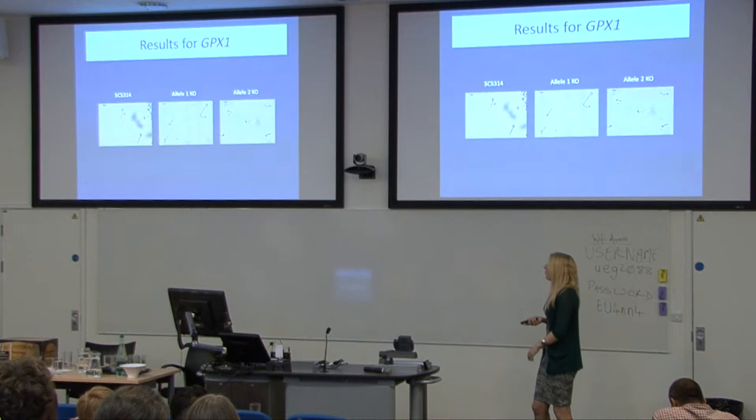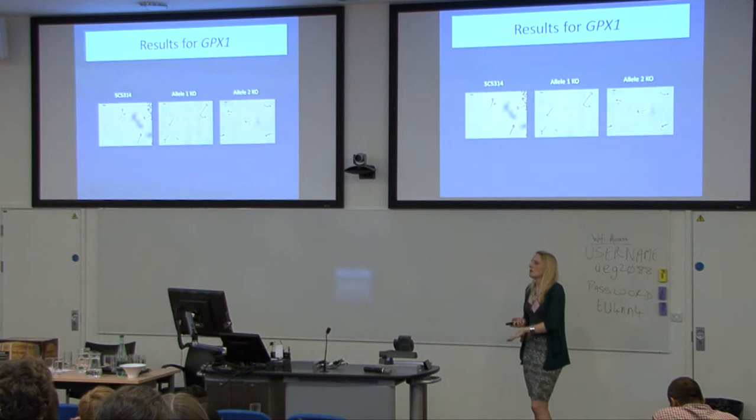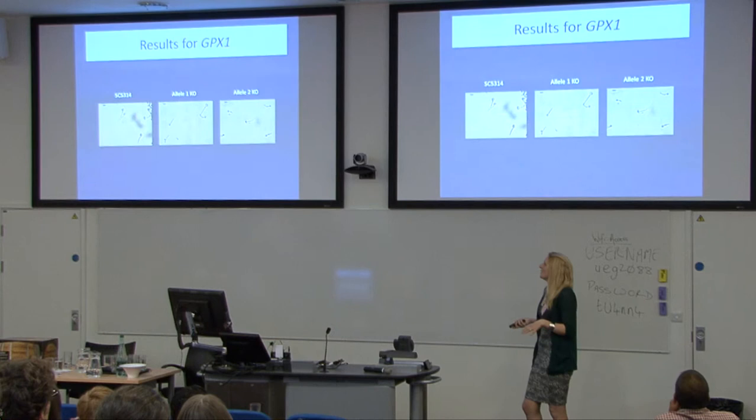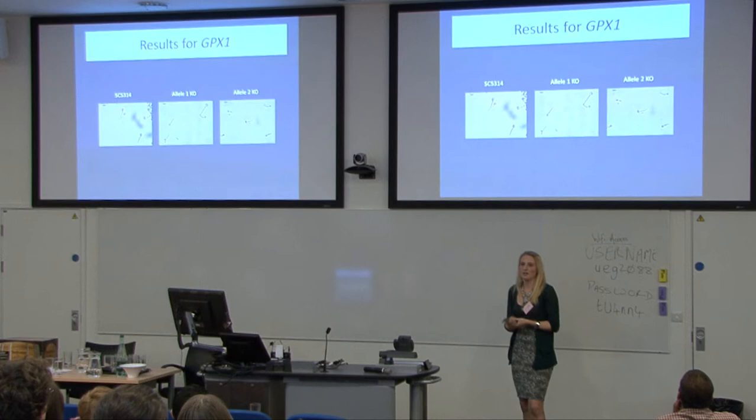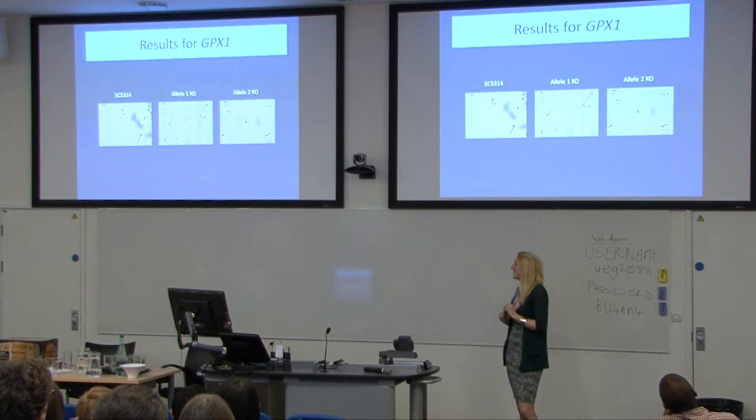Here are the results for one of my knockouts — the glutathione peroxidase gene, GPX1. On all of my knockouts I did general phenotypic screening, including the induction of hyphae. You can see here the wild type, my knockout of allele 1, and my knockout of allele 2 — unfortunately, they all look the same. So the alleles did not differ in function for this phenotype.